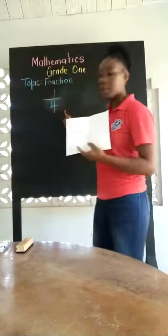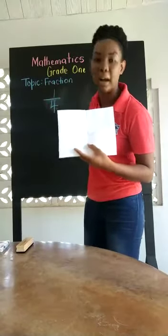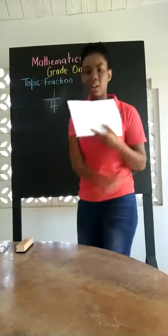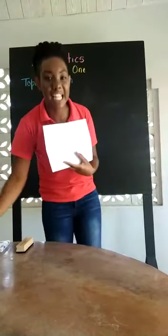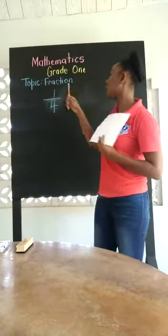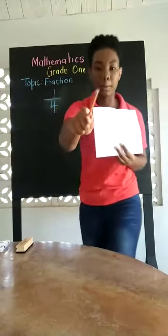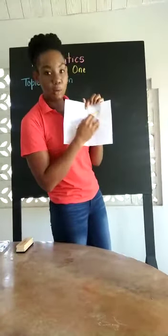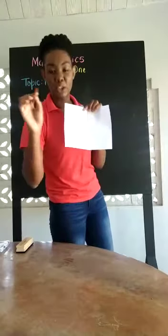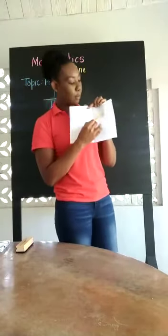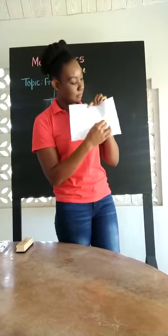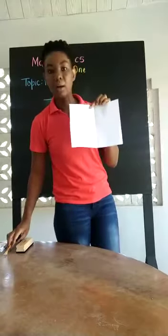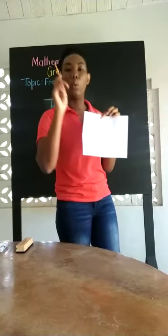The bottom number tells us how many parts we have, and the top number tells us how many parts we need to shade and how many parts we are going to share. Now we are going to shade a quarter of your sheet. I am going to shade a quarter of my sheet with my pencil — you can use a crayon or whatever you choose. I have shaded my quarter, and how many quarters have I shaded? Only one.